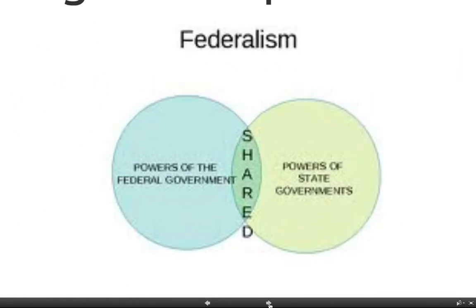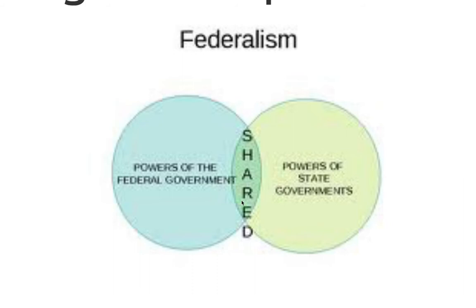Here is a simple Venn diagram that helps visualize this. You have a bunch of powers given to the federal government, a bunch of powers given to state government, and then in the middle you have some powers that both share, like taxing and many other things as well.